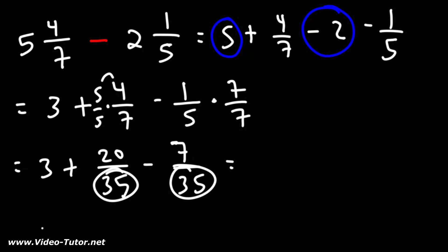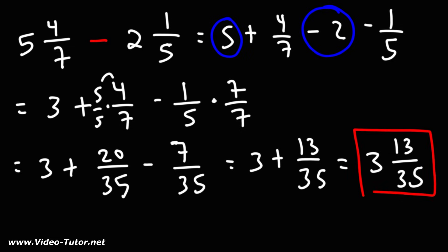So now that we have the same denominator, we can subtract the numerators of the two fractions. 20 minus 7 is 13. Once you have a whole number plus a fraction, you can write it as a mixed number. So this is 3 and 13 over 35. That's the answer. So that's how you can subtract two mixed numbers.